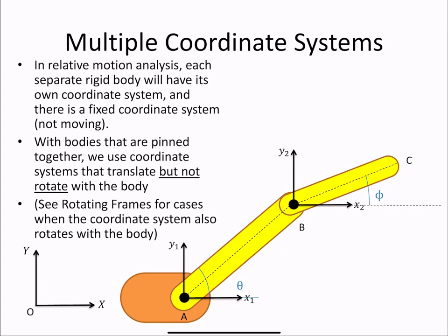In relative motion analysis, each rigid body has its own coordinate system, and there's a fixed coordinate system that's not moving.